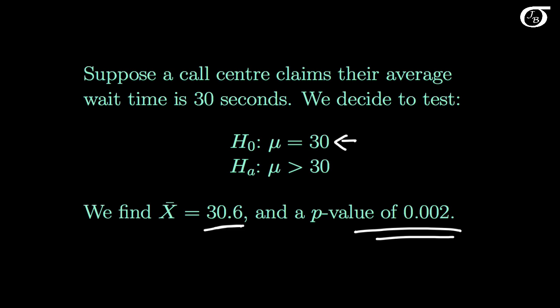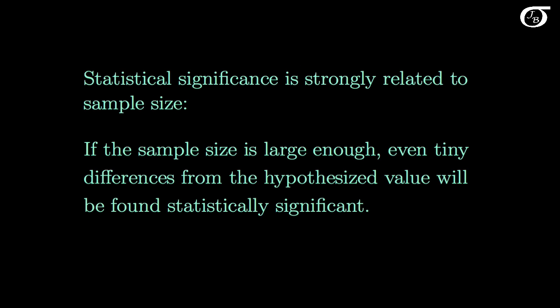How could there be such strong evidence against the null hypothesis if the difference from the hypothesized value is so small? Well, statistical significance is strongly related to sample size. If the sample size is large enough, even tiny differences from the hypothesized value will be found statistically significant.